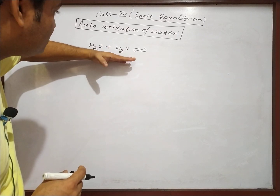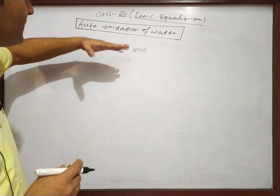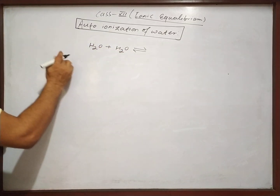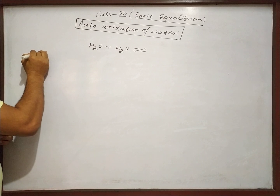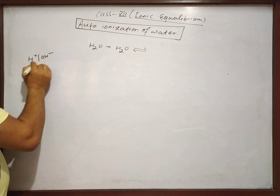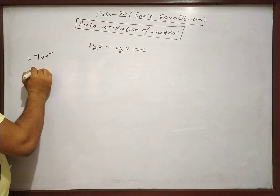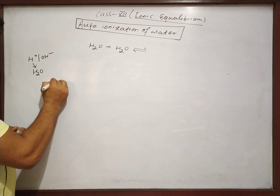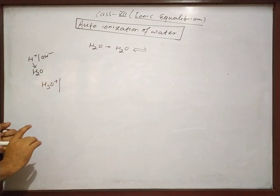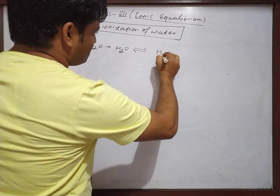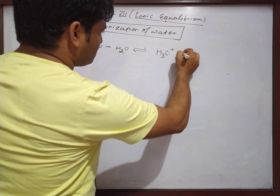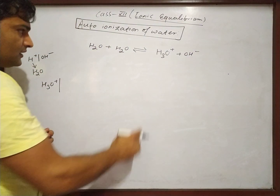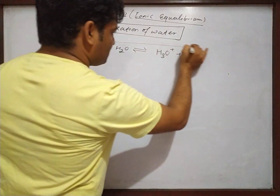Water, H₂O, acts as the solvent. It either acts as an acid or a base; therefore water is called amphiprotic. H₂O produces H₃O⁺, the hydronium ion. So H₂O ionizes to give H₃O⁺ and OH⁻. Water ionizing into these ions is what we call auto ionization of water. This is the exact reaction for auto ionization of water.